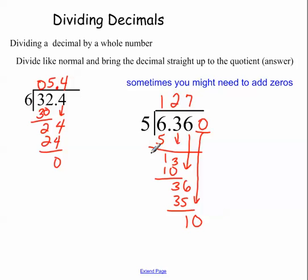So now I'm going to bring down the next number. So 5 goes into 10 two times. Now I have nothing left. So I'm ready to bring my decimal straight up. Okay. So sometimes you might need to add zeros.